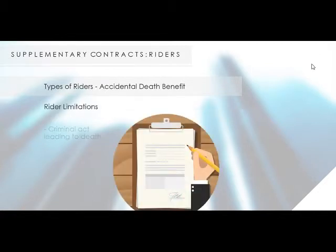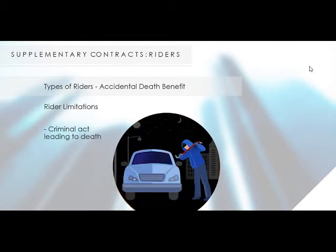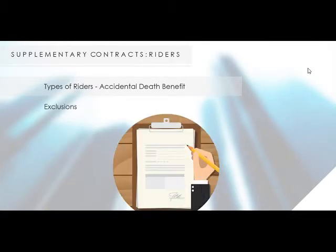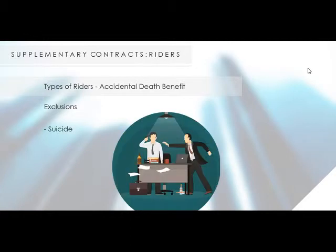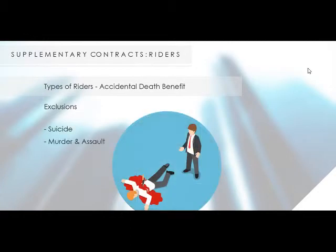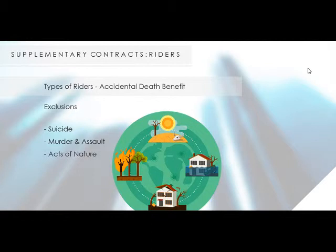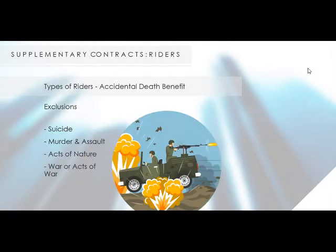Rider Limitations: Criminal Act Leading to Death. If an insured individual, for example, steals a car — that is, car napping or grand theft auto — and this act leads to his death, only the basic plan is paid. Other exclusions include suicide, murder and assault, acts of nature, and war or acts of war.